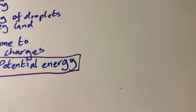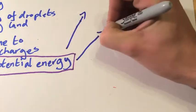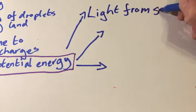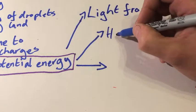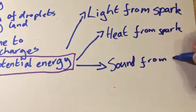To ultimately see what happens to this energy, let's take a look at how the electric potential energy is dissipated. Firstly, we get some light from the spark. Secondly, we get some heat from the spark. And thirdly, we get some sound from the spark.